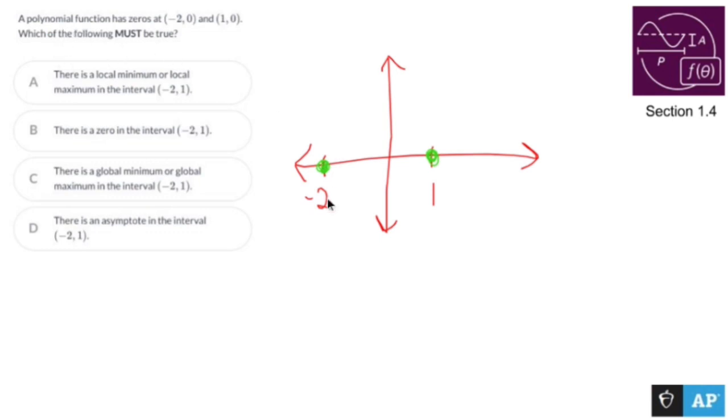It's telling me it's a polynomial, which means something like this could be happening or it could be something like this happening. We don't have that information.